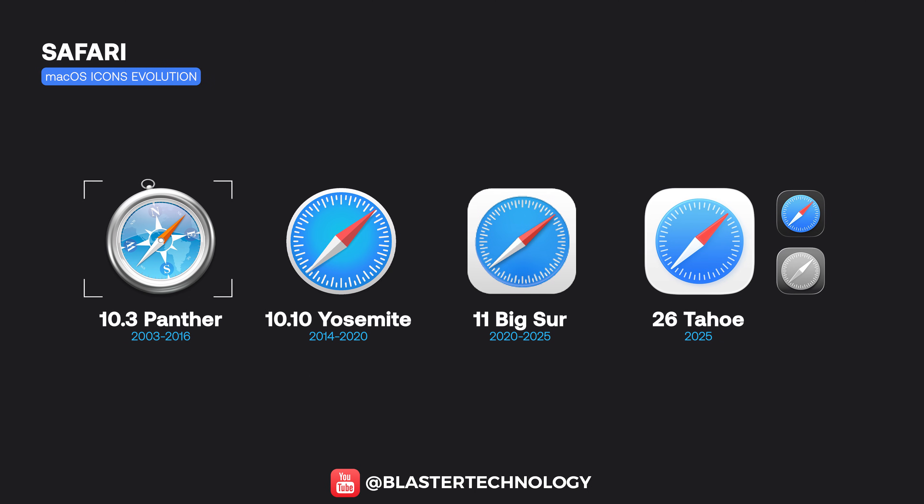Safari became the Mac's default browser starting with the Panther release. From the realistic compass introduced back then, it transitioned to a flat style icon adapted to the new liquid glass design.